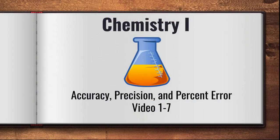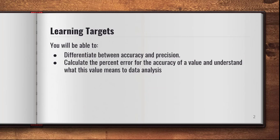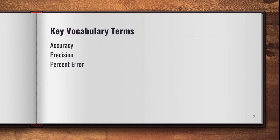Welcome back, ladies and gentlemen. We are continuing through unit one. Our big focus right now is going to be on three key topics: accuracy, precision, and percent error. That's a very common misconception — that accuracy and precision mean the same thing. You'll find out in this video that they are two very different concepts. Key vocabulary terms include accuracy, precision, and percent error.